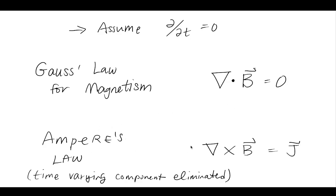Then there is Ampere's Law. In Ampere's Law, we have eliminated a time-varying component by assuming that all d/dt terms are equal to zero. In this one, the curl of the flux is equal to a current, and this current is a constant current in magnetostatics.